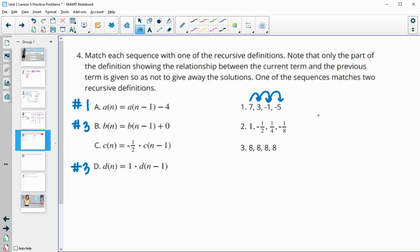And then number 2, if we do 1 times negative 1 half, we get negative 1 half. If we do negative 1 half times negative 1 half, we get positive 1 fourth. If we do positive 1 fourth times negative 1 half, we get negative 1 eighth. So this one is just multiplying by a negative half. So that is for C.